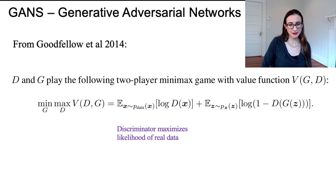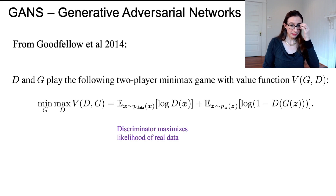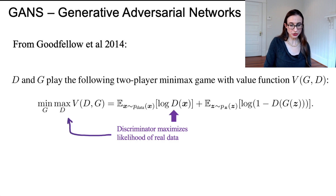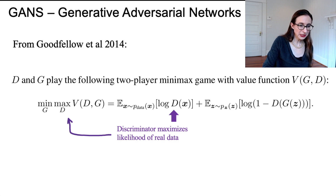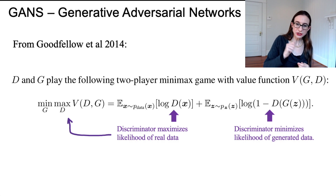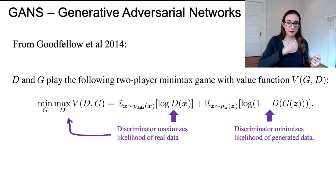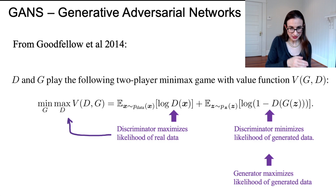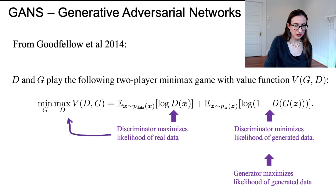The game-theoretic formulation for GANs is a two-player minimax game with value function V. It's min over G, max over D of V. V has two terms. The first involves the discriminator trying to maximize the likelihood of the real data and minimize the likelihood of the generated data. The generator G is inside there, generating fake data fed to the discriminator, and the generator is trying to maximize the likelihood of the generated data. They work against each other — the generator aims to make the discriminator not work well.